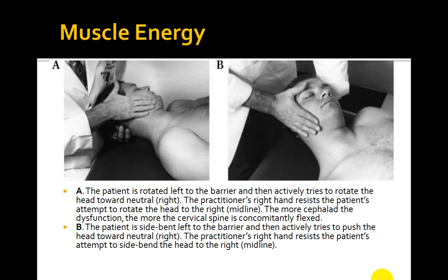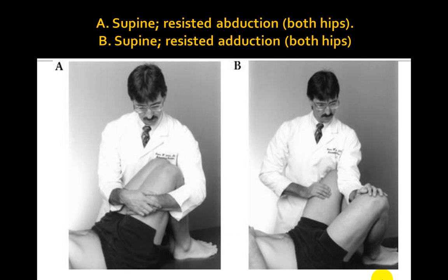In section B, the patient is side bent left to the barrier and then actively tries to push the head towards the neutral right. Since muscle energy is a direct technique — and all muscle energy techniques are direct — you go into the dysfunction. The practitioner's right hand resists the patient's attempt to side bend the head to the right, which is the midline.